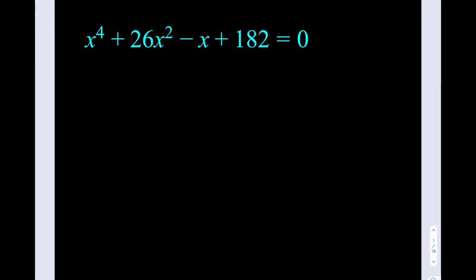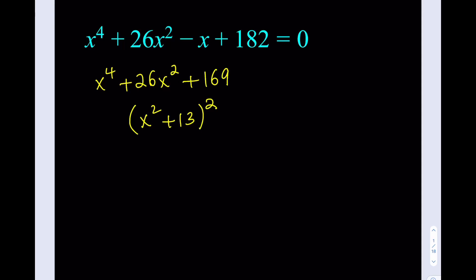I'm going to take advantage of the fact that the first two terms give me the impression that this could be turned into a perfect square plus or minus something. If I can express one side as the square of something and the other side as something else, maybe I can get a difference of two squares. So what I'm going to do is add the appropriate term, which is 169, because I can make it x squared plus 13, quantity squared.